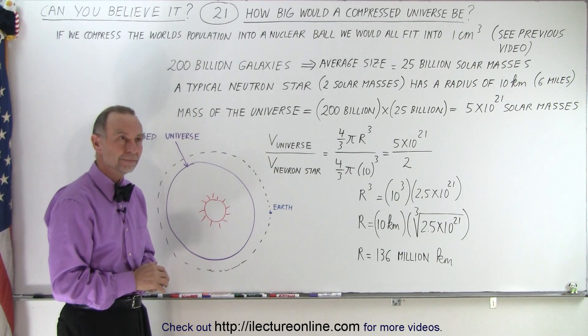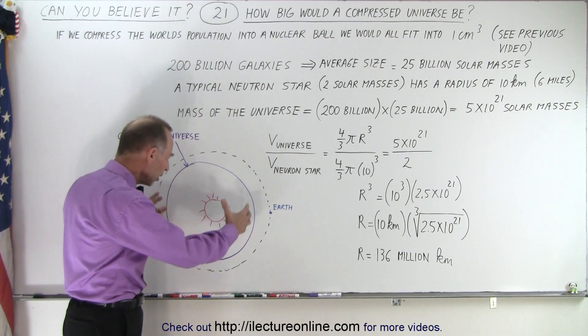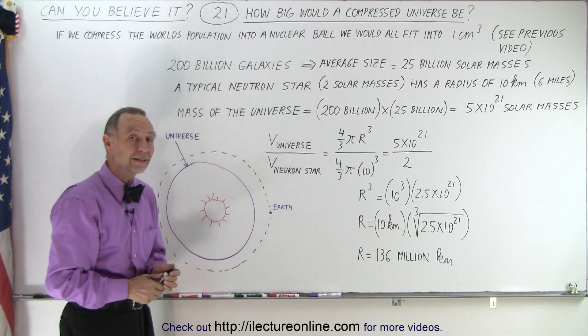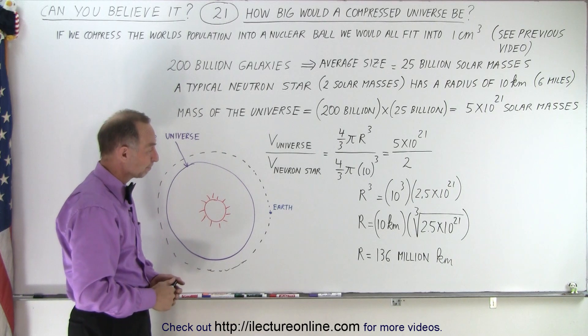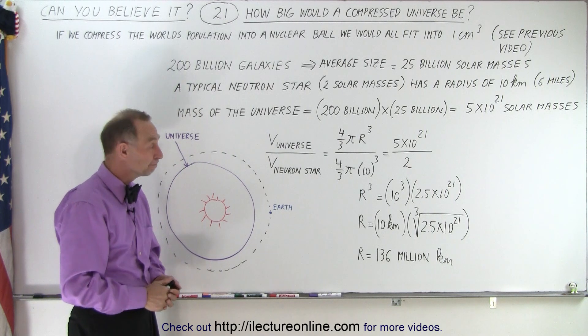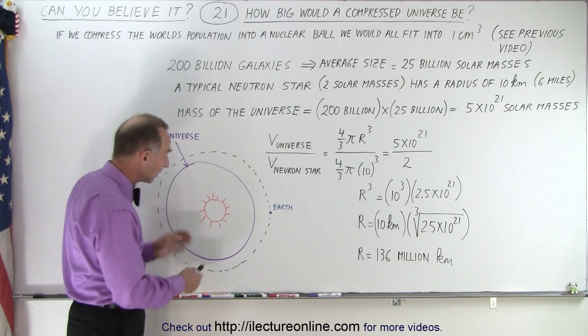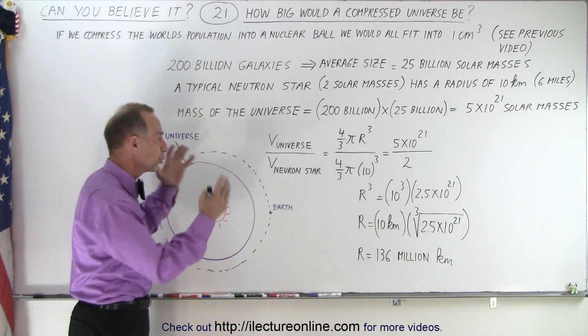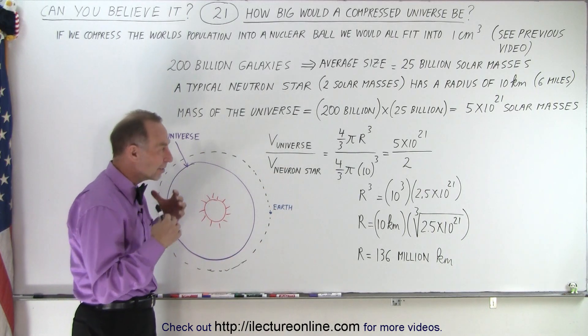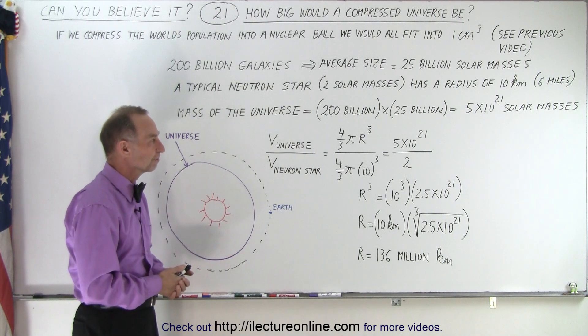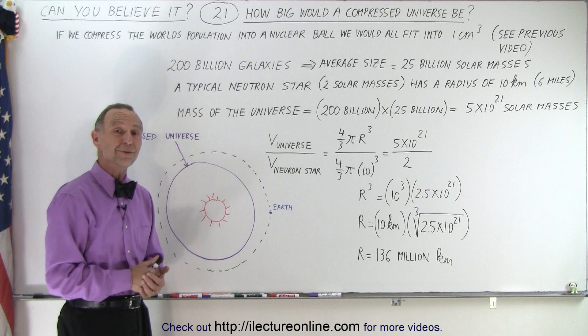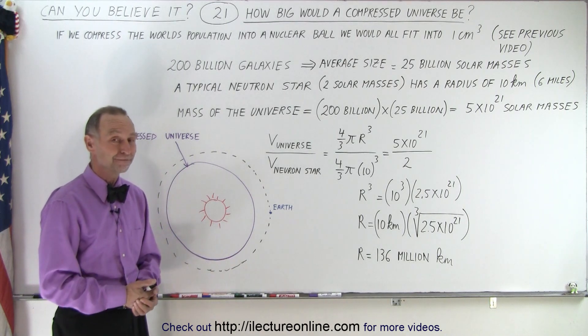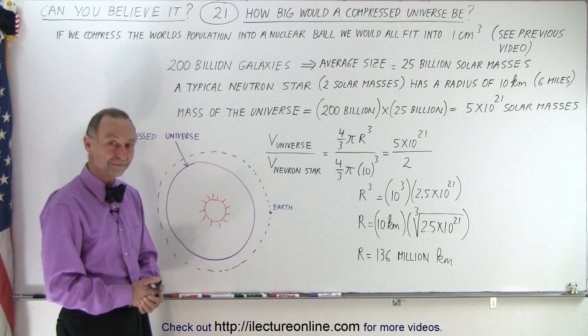That's astounding! How do you make 200 billion galaxies out of a ball of nuclear matter that would fit inside the orbit of the earth? It's absolutely astounding, unimaginable that this little amount of material could fill out an entire universe with 200 billion galaxies and an unimaginable number of stars. That actually surprised me—I didn't think it would be that small.